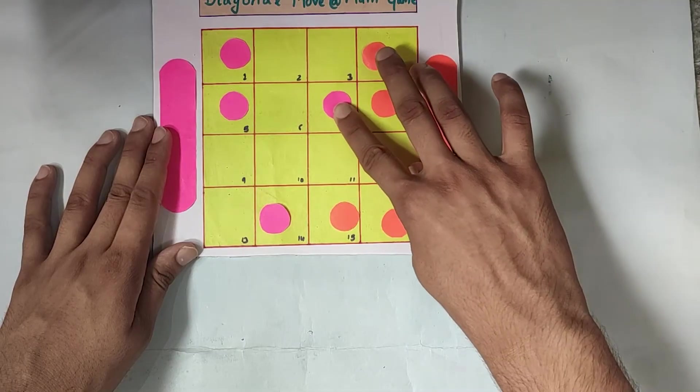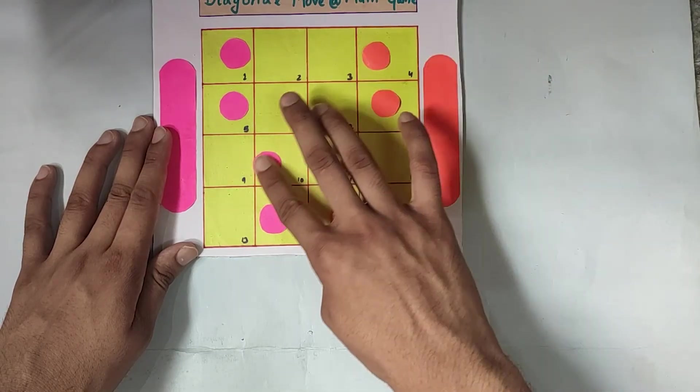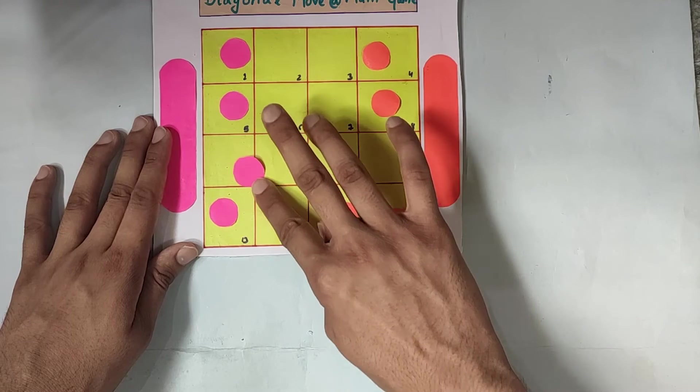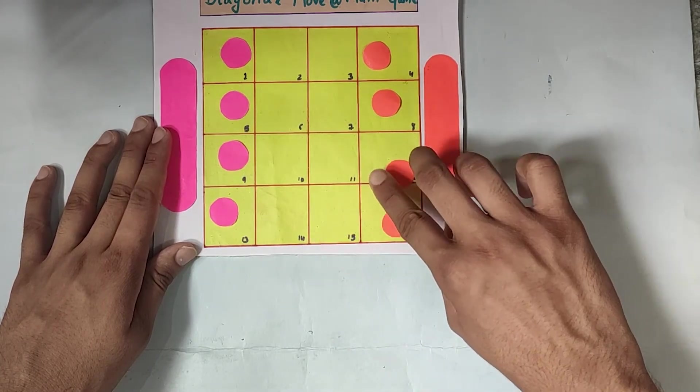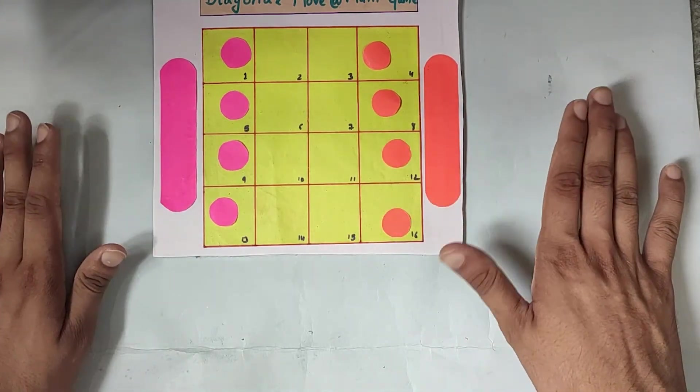Similarly, eleven steps and twelve steps. Now, it's thirteen steps and fourteen. So, you saw, we were able to finish this in fourteen steps.